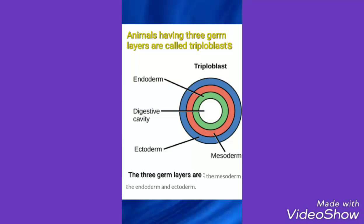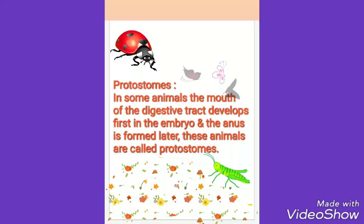Now, what are protostomes? Protostomes are a large and diverse group. The majority of coelomate invertebrates develop as protostomes. In some animals, the mouth of the digestive tract develops first in the embryo and the anus is formed later. These animals are called protostomes.